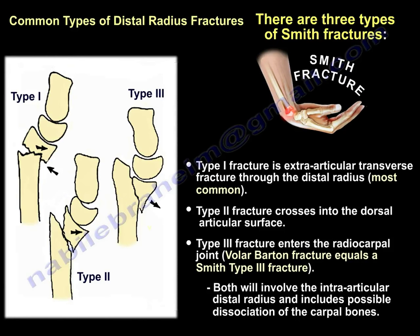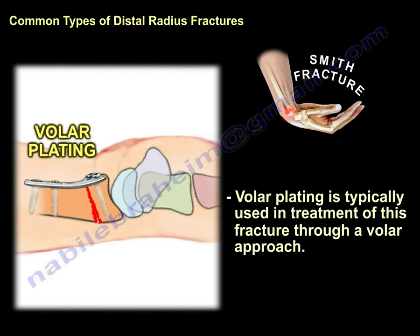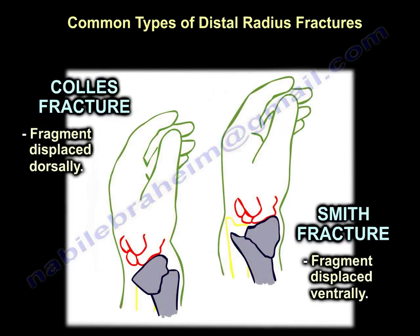Volar Barton fracture equals Smith Type 3 fracture. Both involve the intra-articular distal radius and include possible dissociation of the carpal bones. The three types of Smith fractures show that Type 3 looks like a volar Barton fracture and Type 1 looks like a reverse Colles fracture — note the volar direction of the fragment. Volar approach and plating to support this fragment is usually the treatment. The key difference between Colles and Smith fractures is the direction of displacement: Colles is dorsal, Smith is palmar or volar.